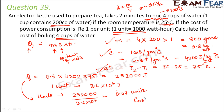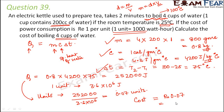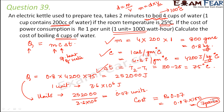Since the cost is 1 rupee per unit, the cost for 0.07 units is 0.07 rupees, which equals 7 paise. So the cost of power consumption for boiling four cups of water is 7 paise.